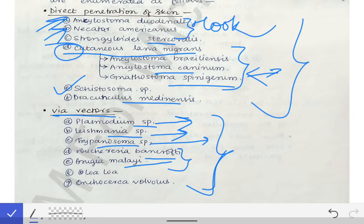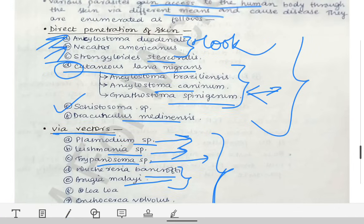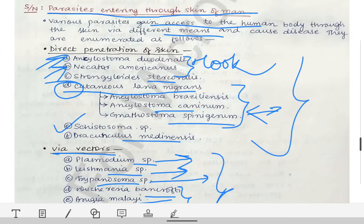So these are all the parasites which get into the human body through the skin, one by direct penetration and the second by vectors. If someone asks you, please cite these examples. They will be happy to hear these names. That's all for this video.